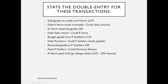If A Harris then pays us £225 by cheque — that's because we sold goods worth £275 and A Harris returned goods worth £50, so the difference is £225 — we debit the bank account and credit the A Harris account. The A Harris account should now have a balance of zero.